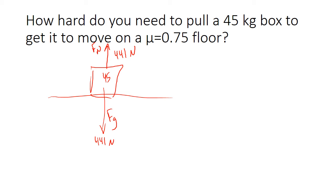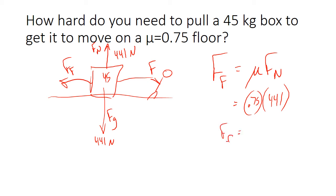Now if we want to pull this, we have to pull harder than the friction force. The friction force is going to go this way and our force is going to go this way. Let's calculate the friction force. The friction force equals μ times the force normal. The force normal is 441. The coefficient is 0.75. So the force of friction equals about 331 newtons.